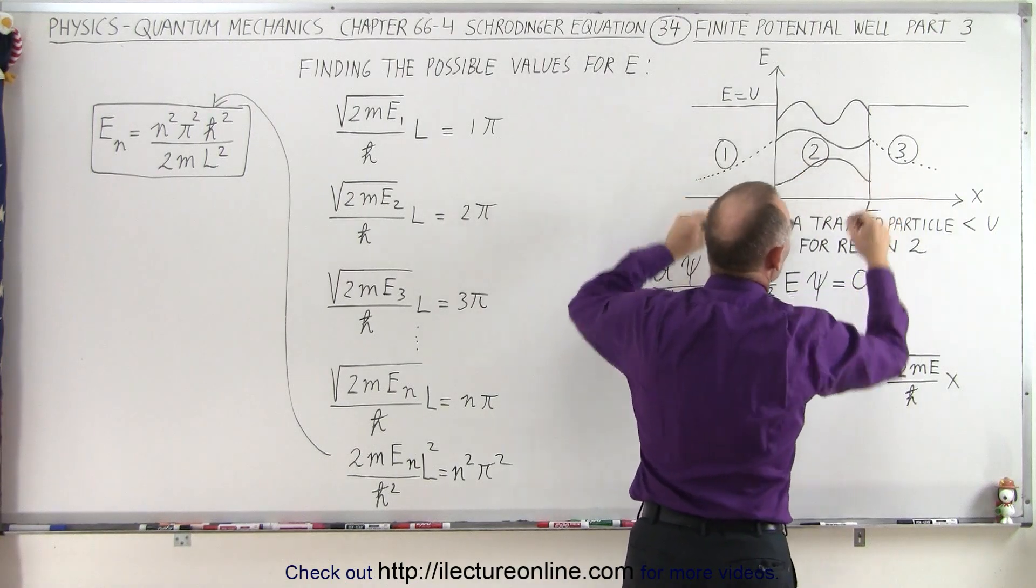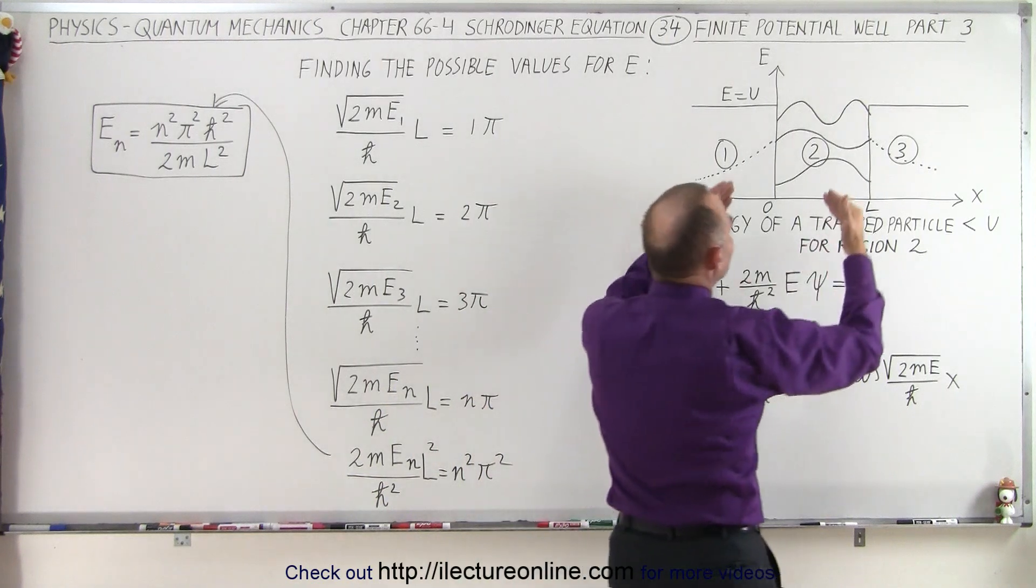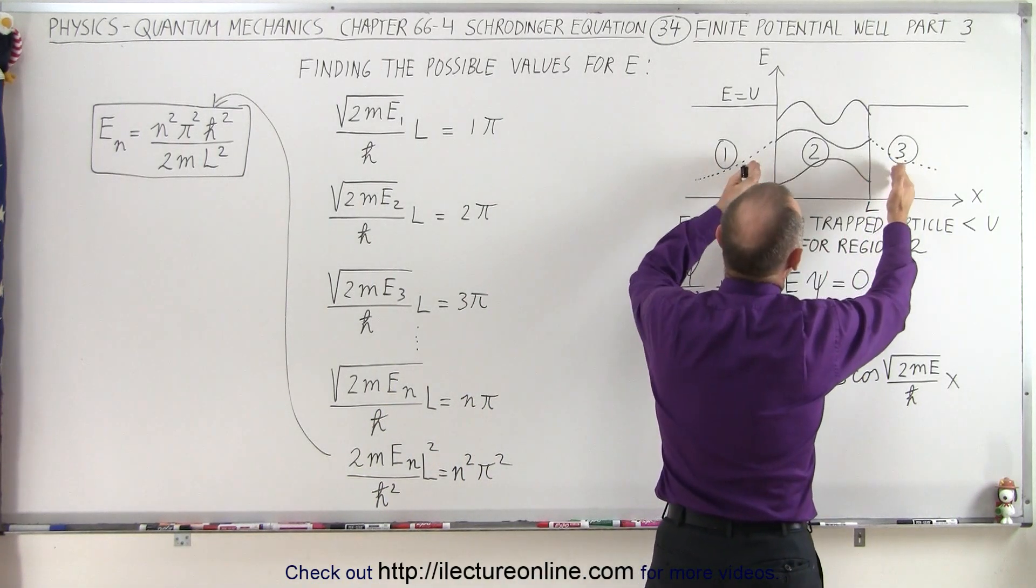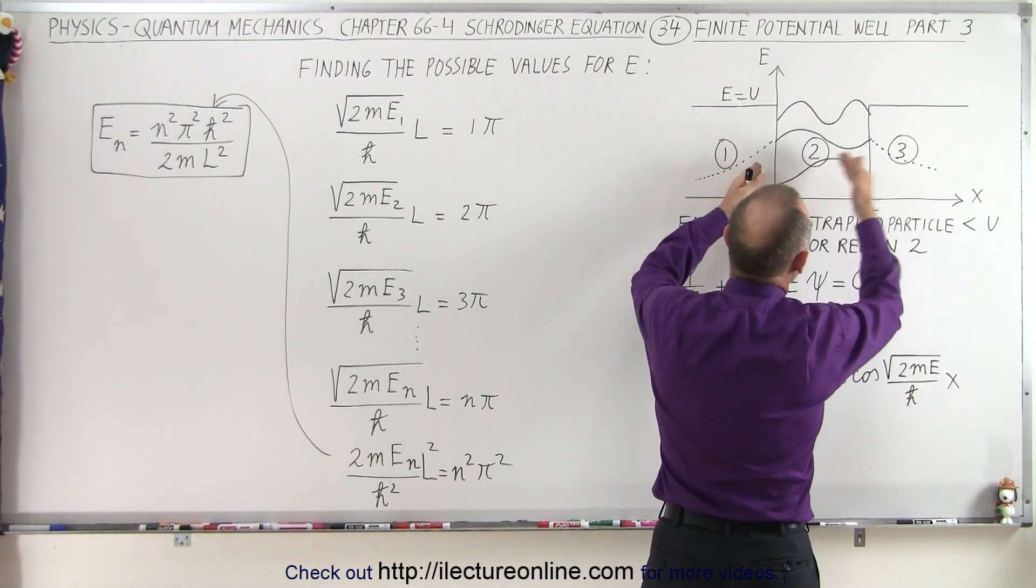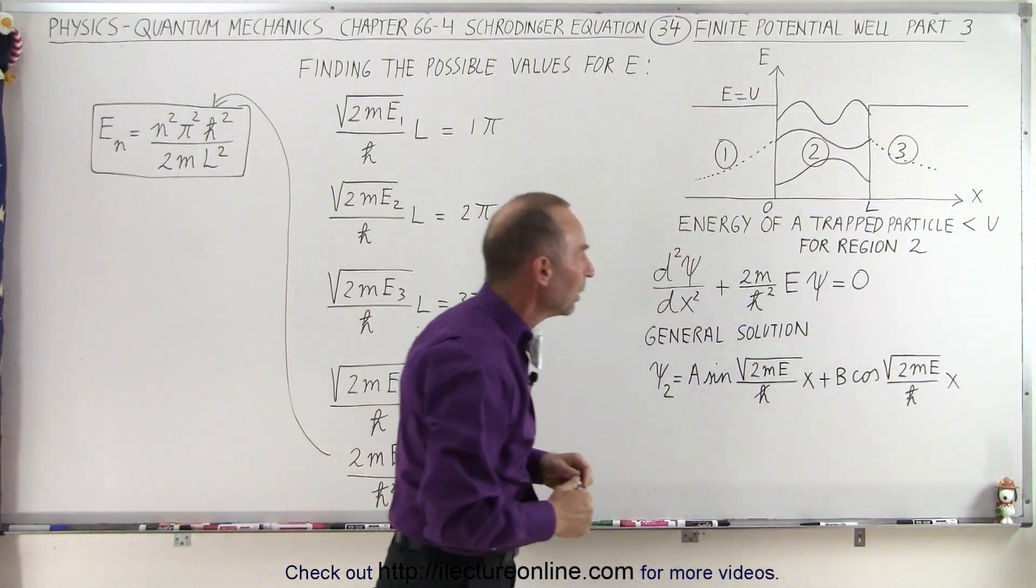...in region 1 and region 3. Because in a finite potential well, the particle can reside to a small extent inside these two barriers on either side, as long as the barriers are not infinite in energy.